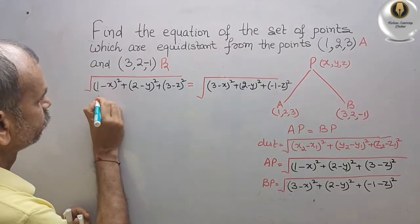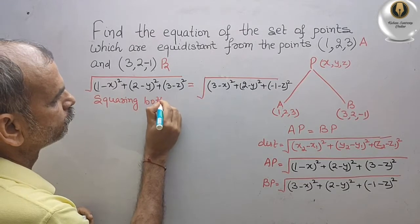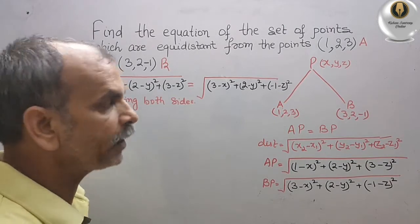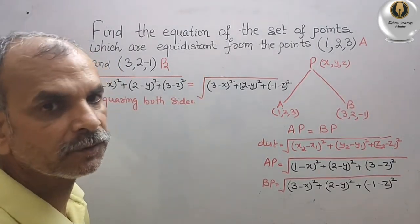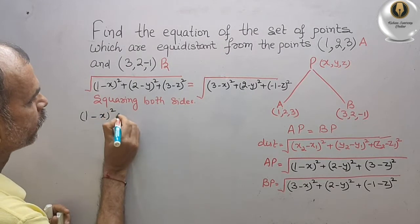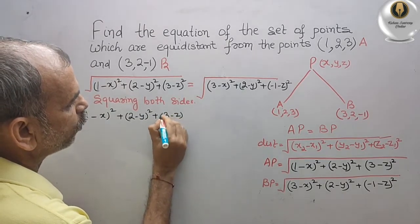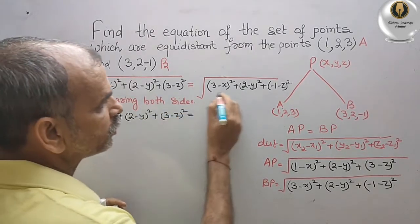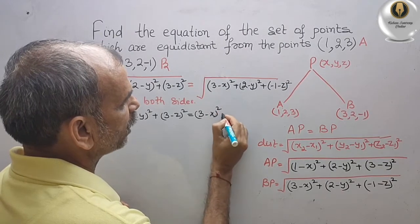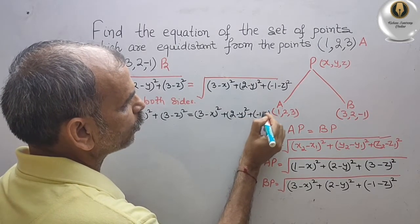Squaring both sides. After squaring both sides, the square root will go out and only the values will remain. That gives us: (1 minus x) whole square plus (2 minus y) whole square plus (3 minus z) whole square equals (3 minus x) whole square plus (2 minus y) whole square plus (-1 minus z) whole square.